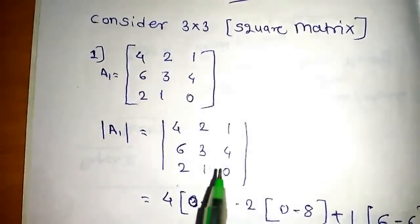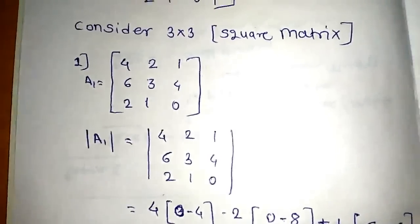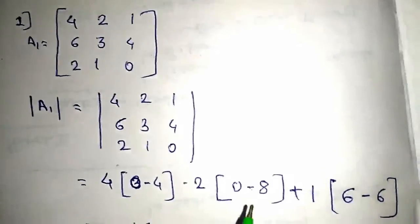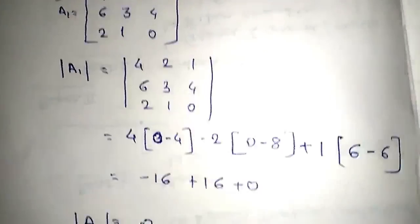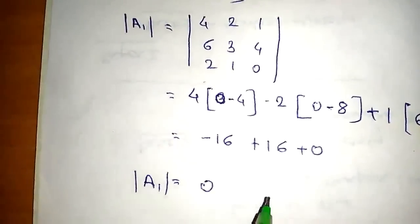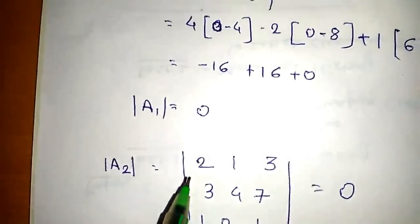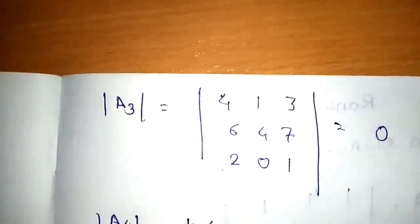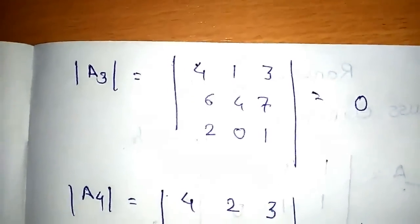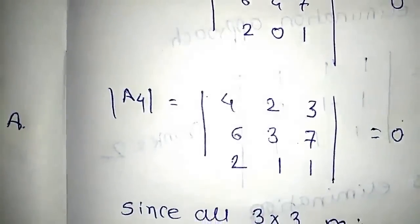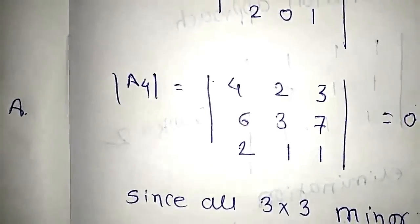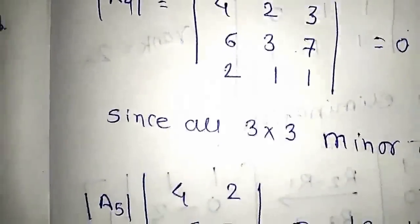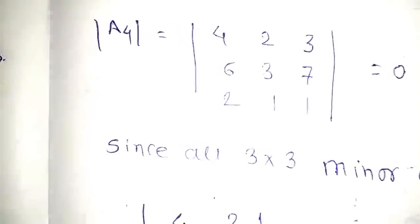The determinant of this 3x3 matrix is 0. We calculate the determinant of another submatrix — 4, 4, 2, 3, 6, 3, 7, 2, 1, 1 — where we have eliminated the third column, and again the determinant is equal to 0. So we can say all the 3x3 minors are 0.